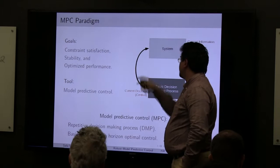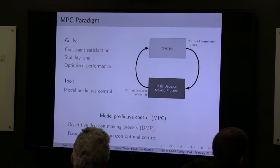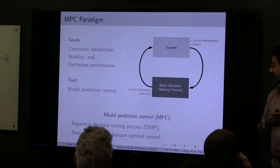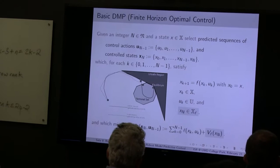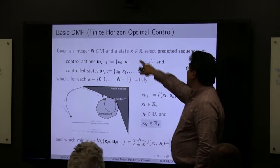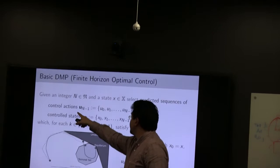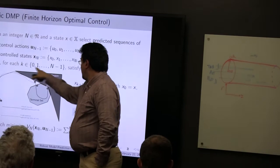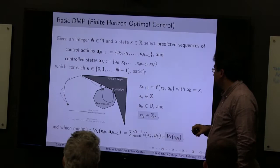A very broad general description of model predictive control is that it is a repetitive decision-making process where the basic decision-making process finds a finite-horizon optimal control. Given a prediction horizon N and a state x, you select predicted sequences of control actions and states over the horizon N, which during the horizon satisfy dynamical consistency — where f represents the model of the system — while respecting state and control constraints.